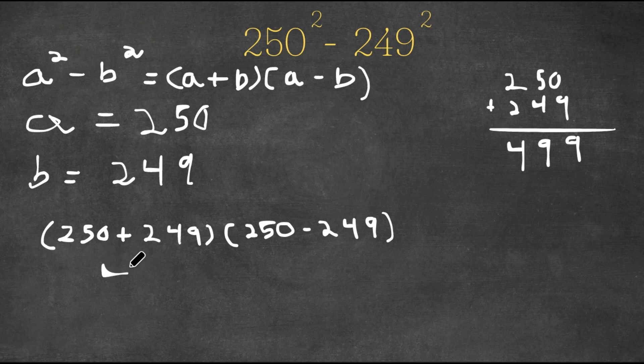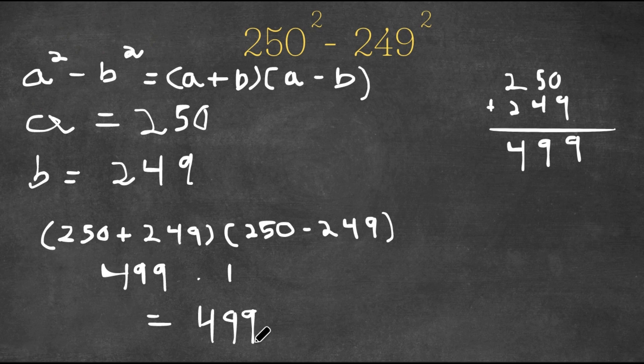So we get 499 times 1, which is simply just 499. So this is our answer.